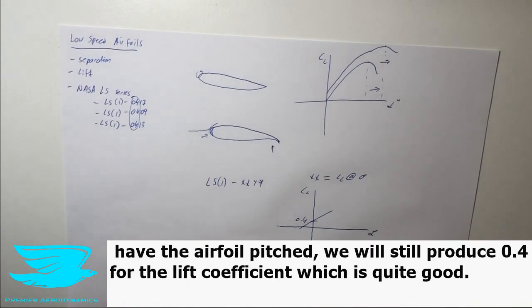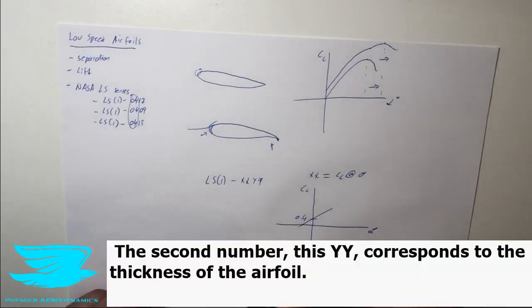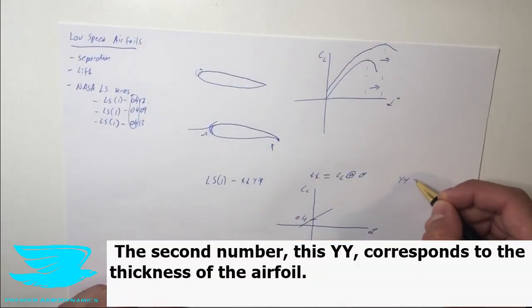So that's pretty good because that means we know that if we don't have the airfoil pitched at an angle, we will still produce 0.4 for this coefficient, which is quite good. The second number, this YY, corresponds to the thickness...